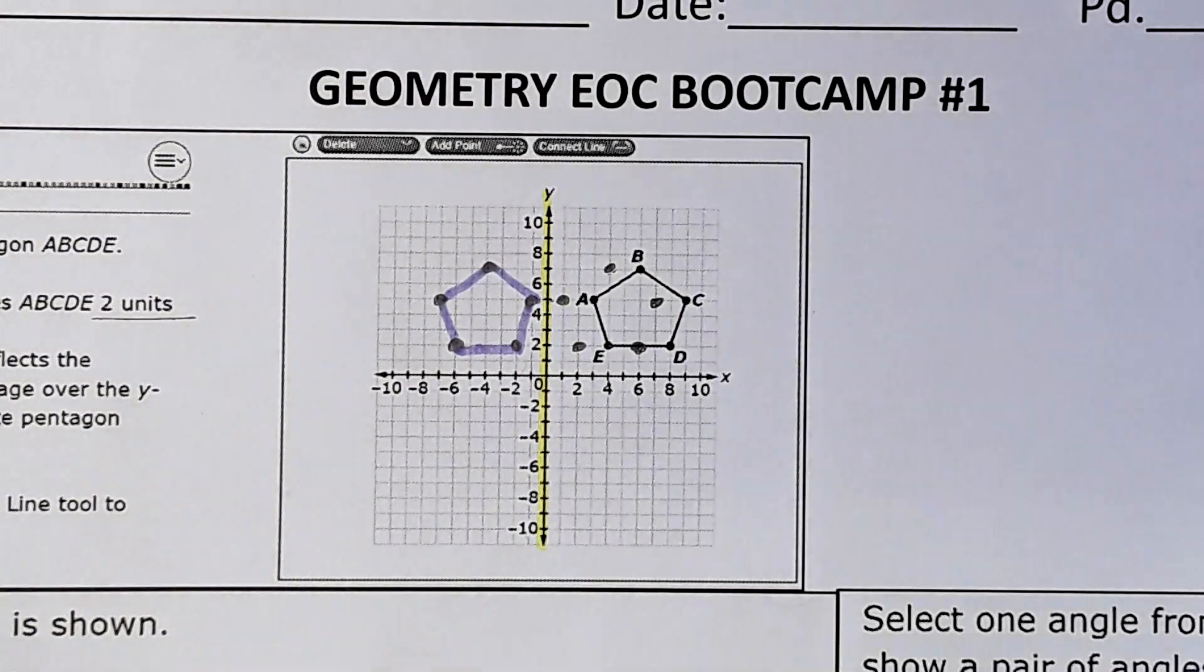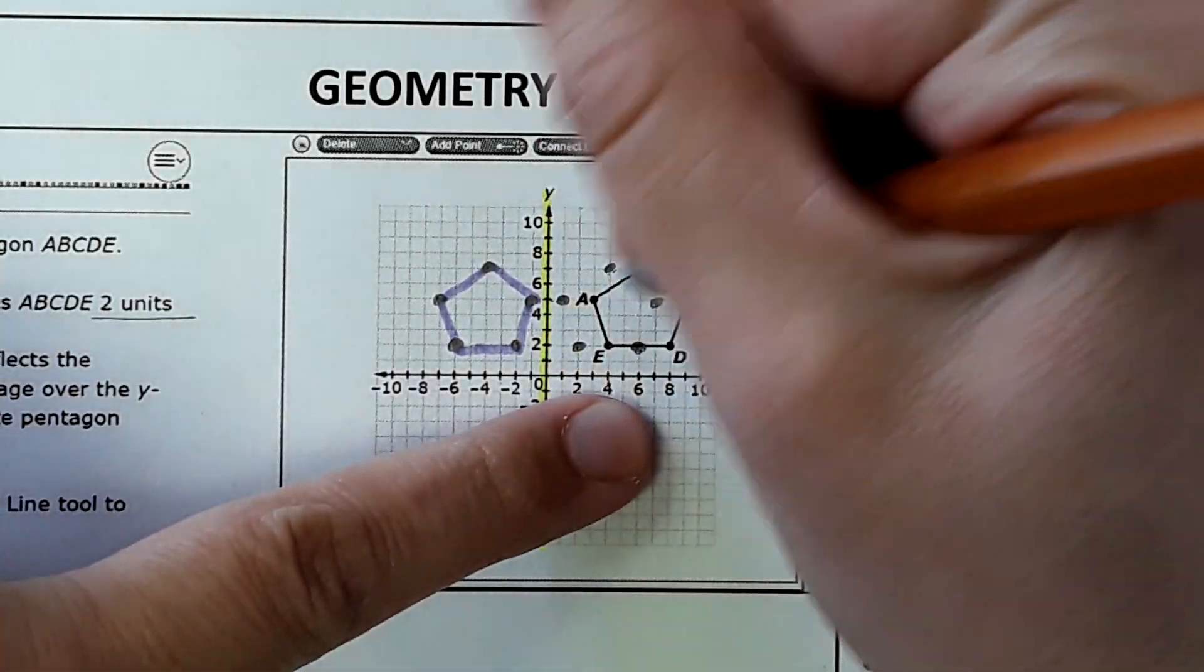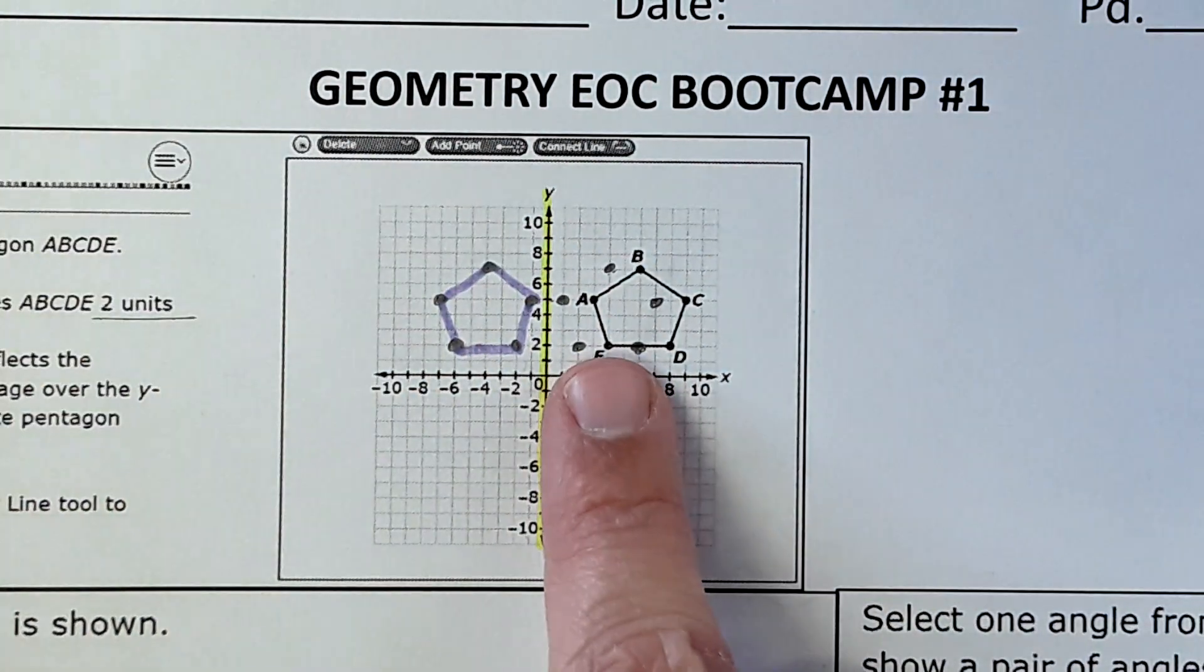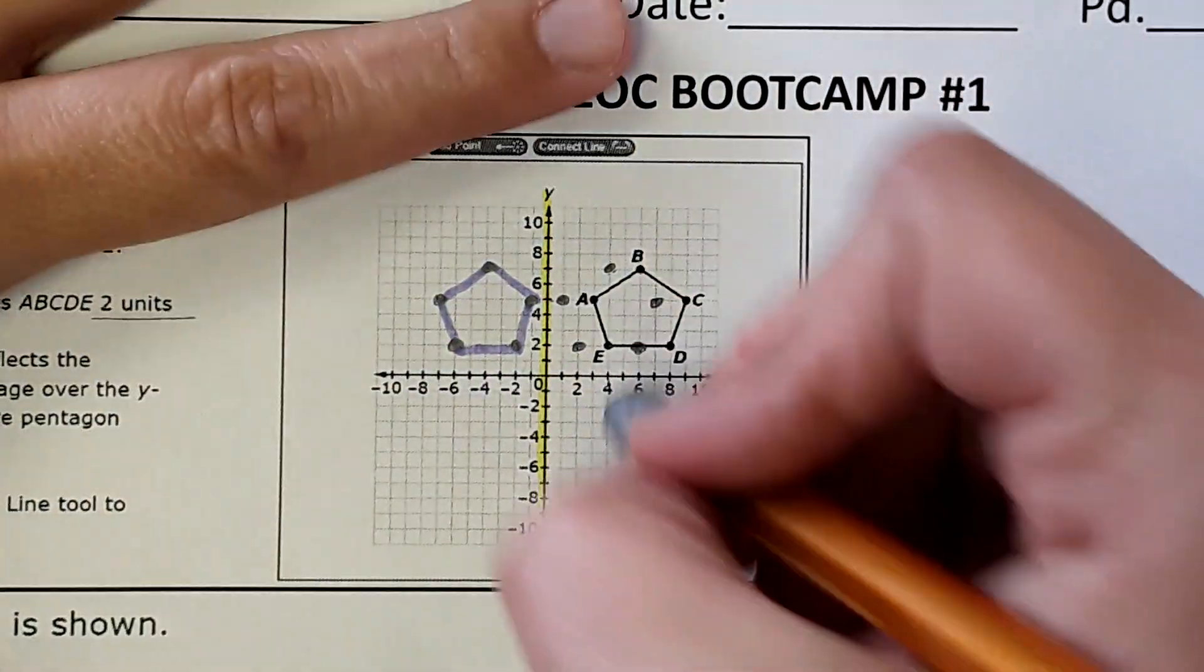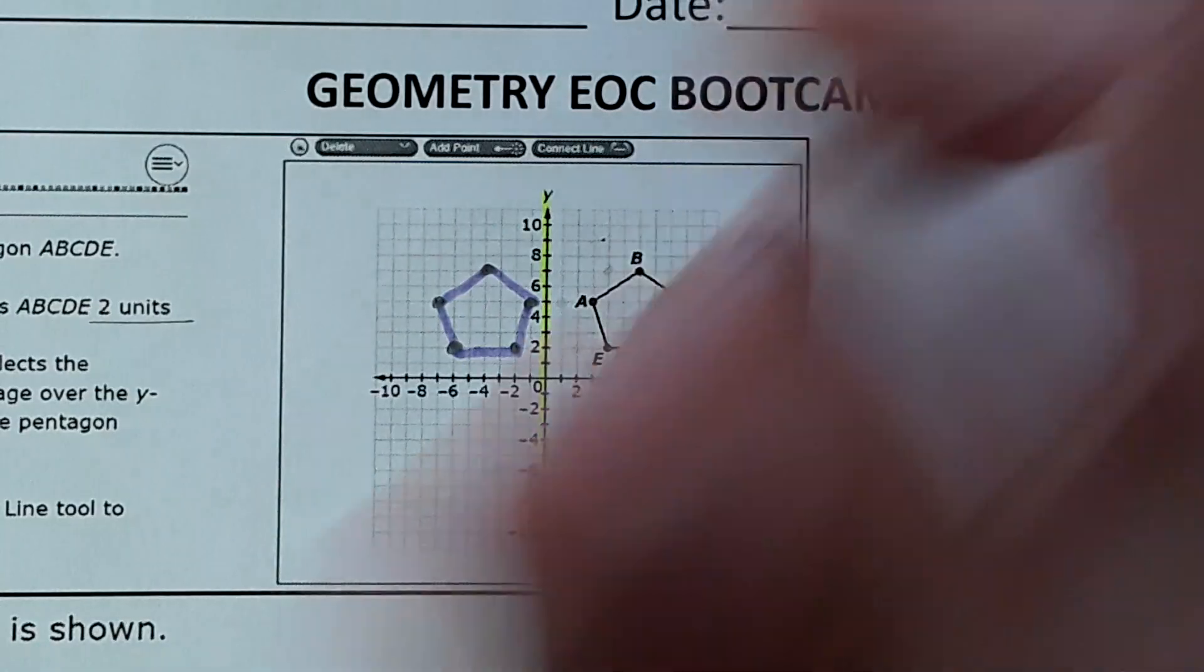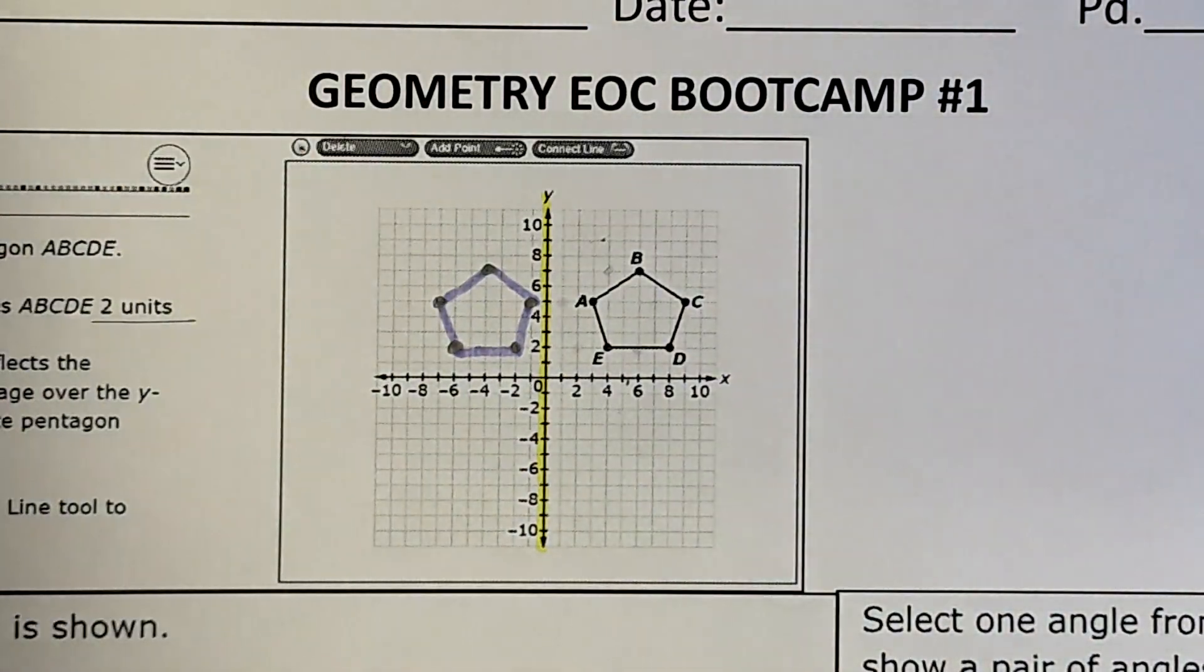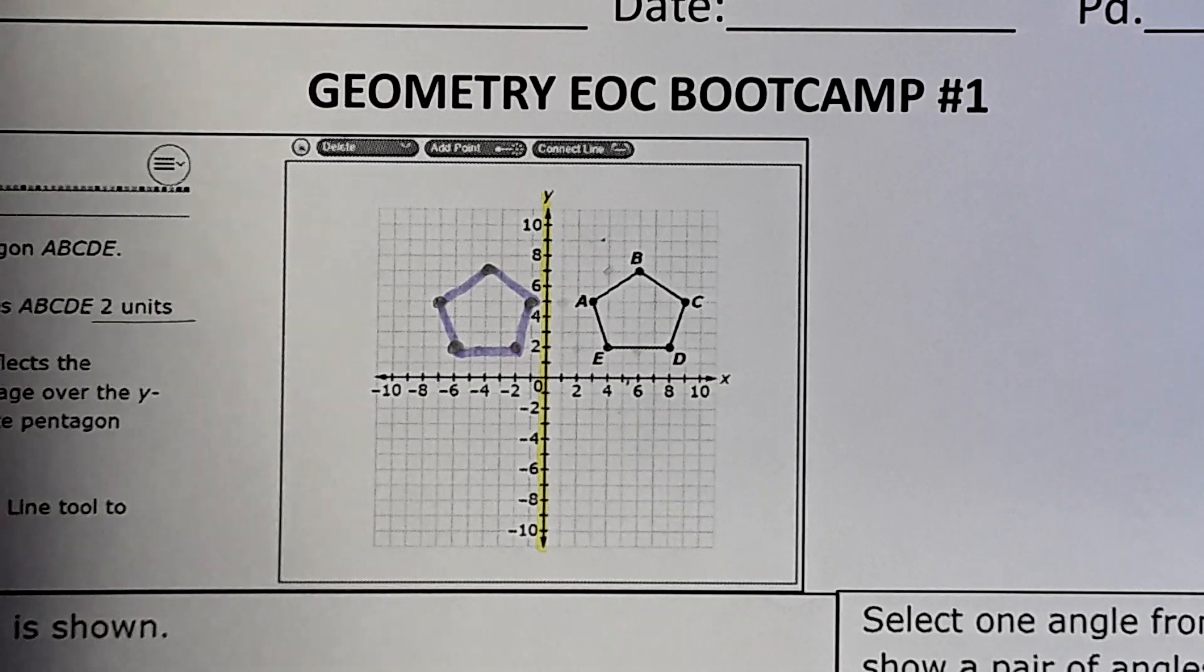You might also notice that these points over here aren't part of the answer. You may need to plot them just so you translated it two to the left and then reflected it, but afterwards delete those points because it's not part of the answer. There's a delete button right there. Let me make sure this matches the answer key.